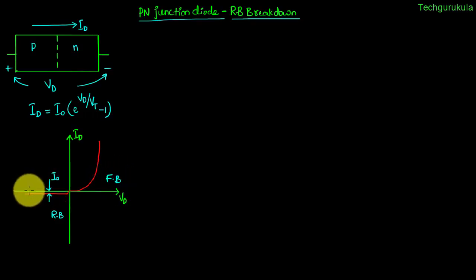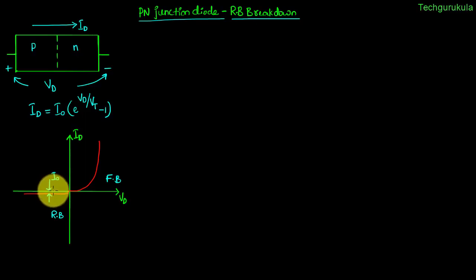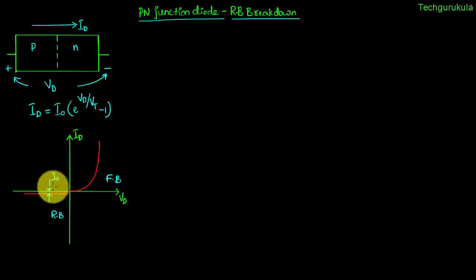When V_D is negative, the current flows in the opposite direction, and the amount of current that flows is I_0, which is a very small value — we can almost neglect it. This means the diode doesn't allow current to flow through it when it is reverse biased. The diode current equation tells us that in reverse bias, however much voltage we apply, the current is going to be I_0, which is negligible and independent of the applied voltage.